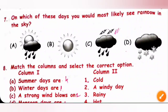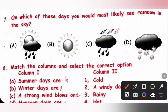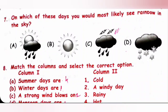Question 7: On which of these days would you most likely see a rainbow in the sky? We would most likely see a rainbow in the sky on a rainy day with sun — rain with sun. So option A is the correct answer.